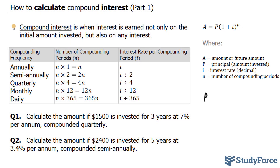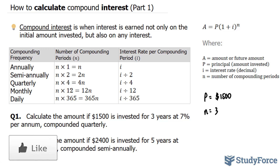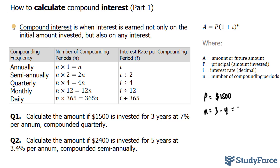Our principal amount P is equal to $1,500, and we are told that this amount is invested for 3 years. Our period n is equal to the number of compounding periods. To calculate n, we take the 3-year period and multiply it by the number of times it is compounded. In our case, it is compounded quarterly, so according to the chart, we multiply by 4. Our n is 3 times 4, which gives us 12 compounding periods within these 3 years.